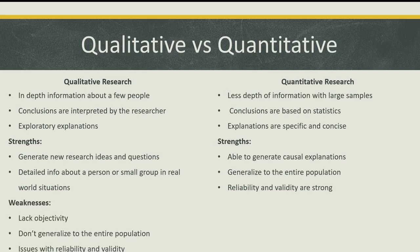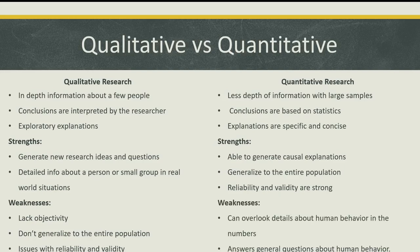Some weaknesses of qualitative research are that they lack objectivity, don't generalize to the entire population due to small sample sizes, and there are issues with reliability and validity. Some weaknesses of quantitative research include that they could overlook details and specific information about human behavior in the numbers. Researchers might lose important information that qualitative research can answer, and quantitative research only answers general questions about human behavior, whereas qualitative research addresses more specific questions about natural human behavior.